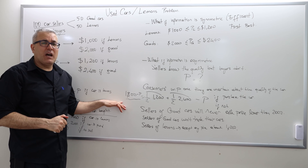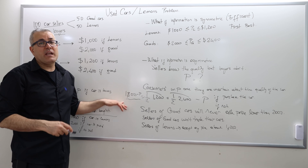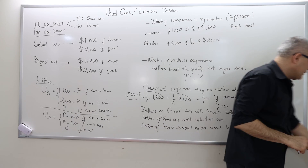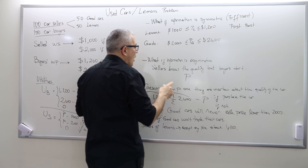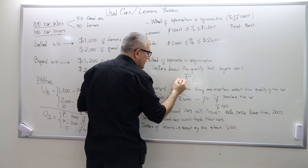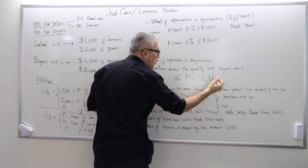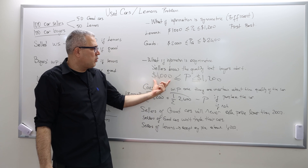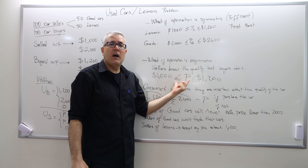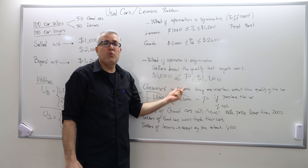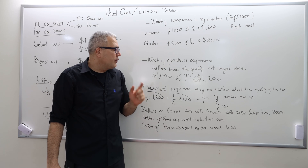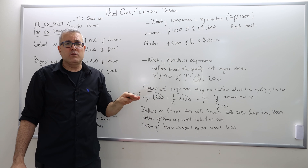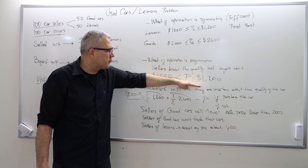I'm not going to pay $1,800 for a lemon — I'm going to pay only $1,200 at most. Therefore, the bottom line is that in this market, when there is asymmetric information, only the lemons will be traded and the price is going to be somewhere between $1,000 and $1,200. Because at all those prices, the lemon owners are willing to sell, and the buyers are willing to pay for those lemons. When there is asymmetric information, good cars will not be sold — only the lemons will be sold and the market price is going to be in this range.